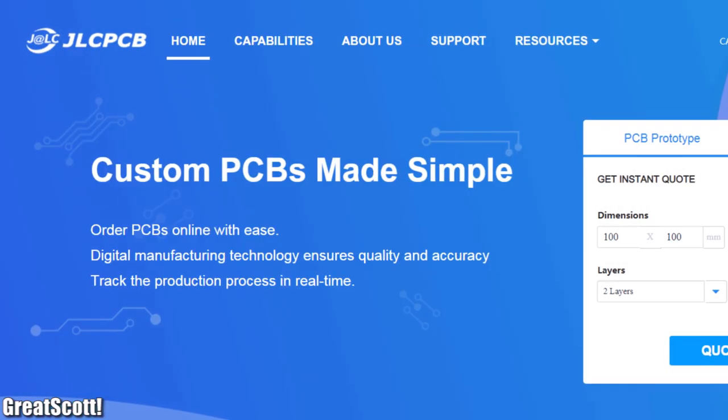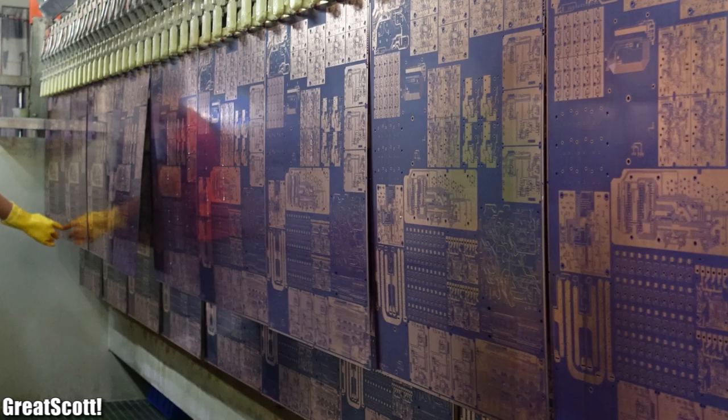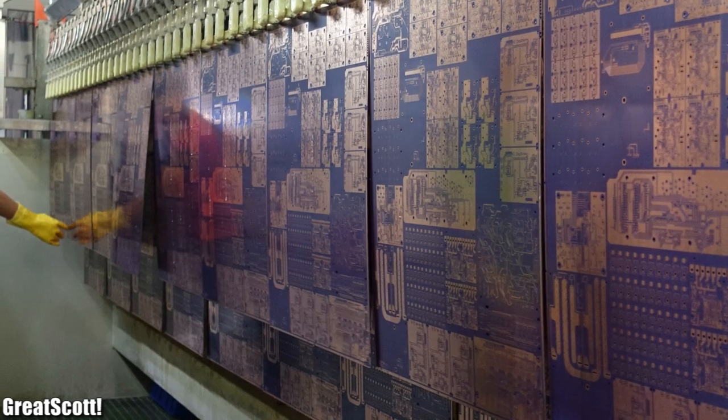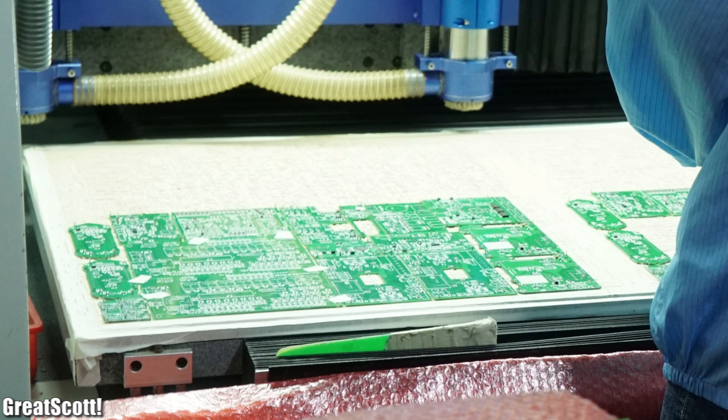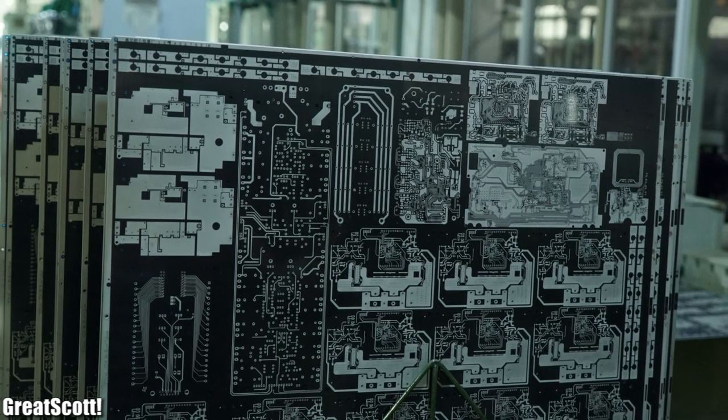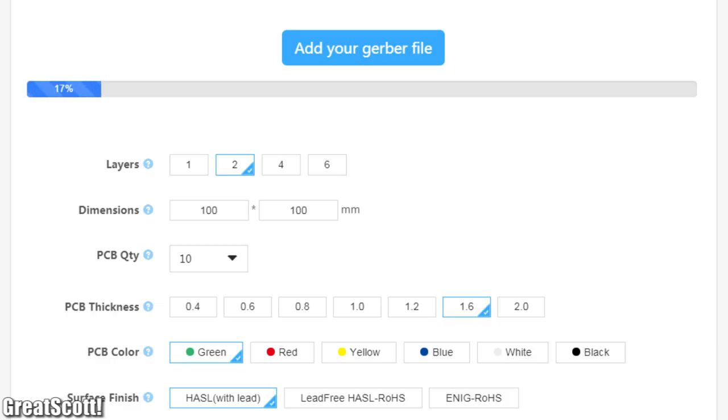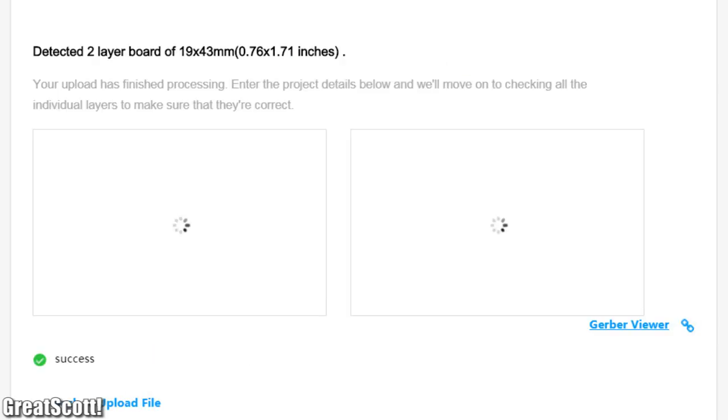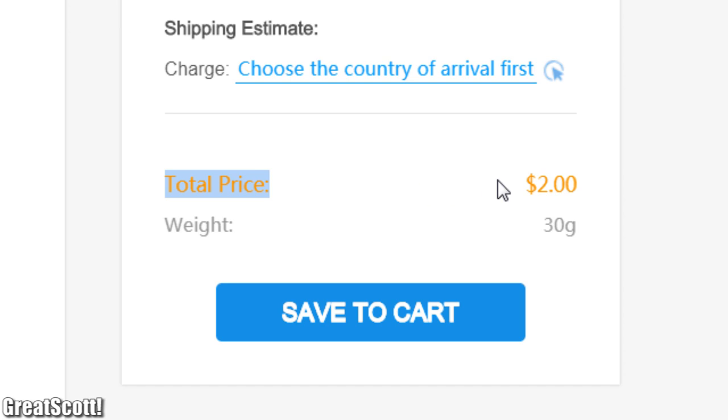This video is sponsored by JLCPCB whose new full automatic PCB batch production factory is being used since April. They produce 600,000 square meters of PCBs per month and you can get your own two-layer prototype PCB for as low as two dollars.